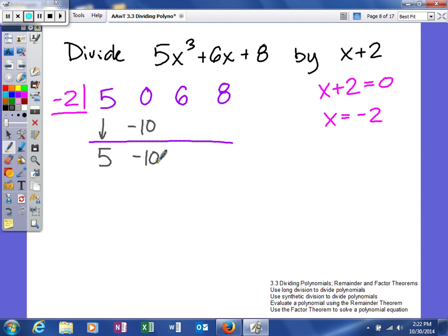As you can see, negative 10 is below the line. So, we're going to multiply it by negative 2. When you do that, you'll get a positive 20. And then, we're going to add these two numbers together to get 26.